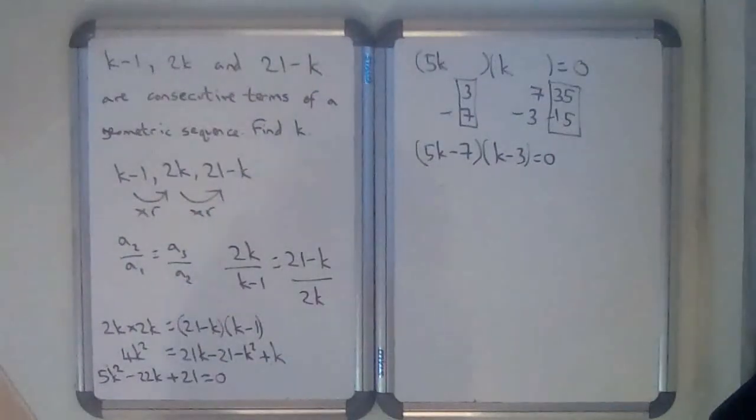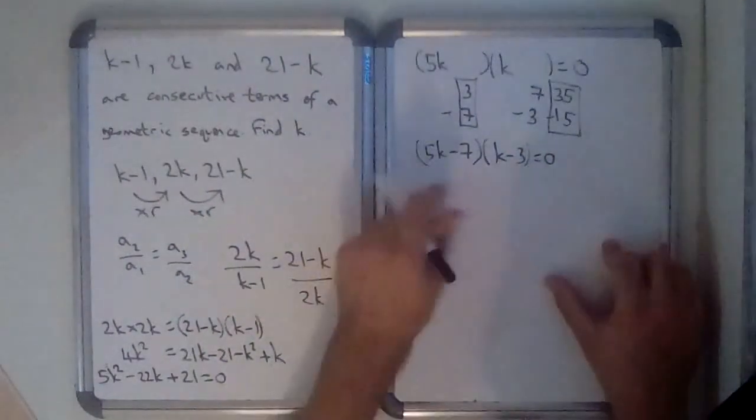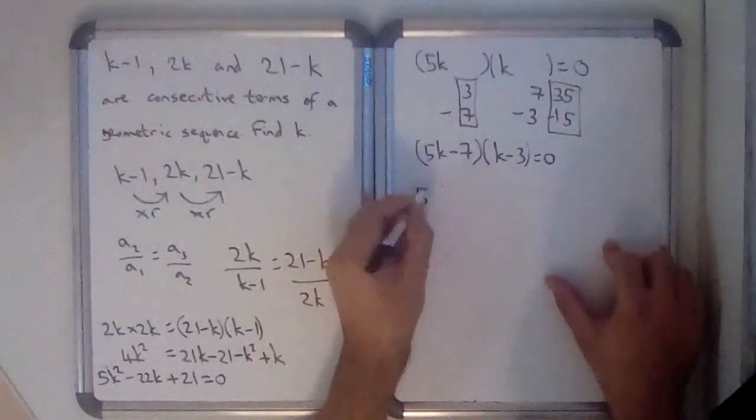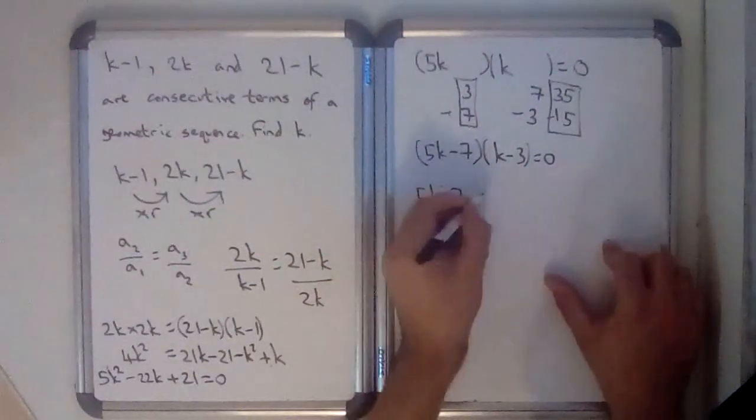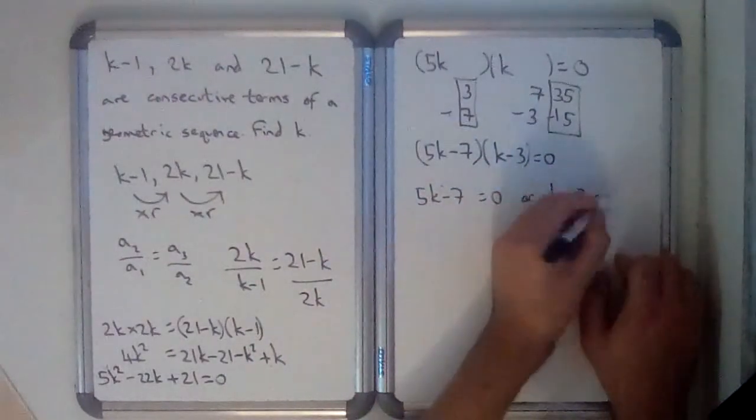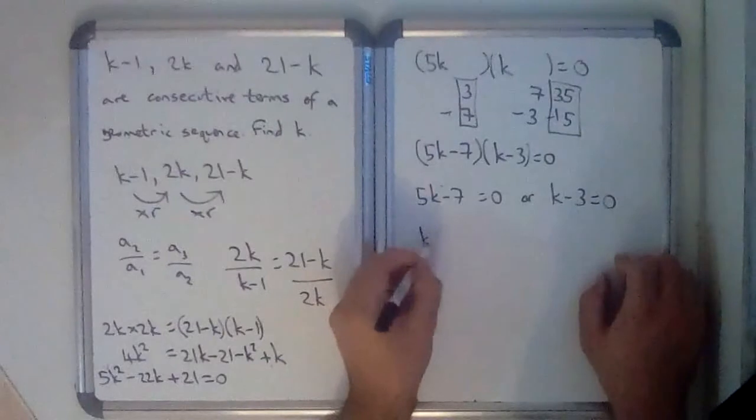So that means there's two possible values of k that would make this situation true. So k could equal, well basically 5k minus 7 equals 0, or k minus 3 equals 0. So in the first case, k would be...